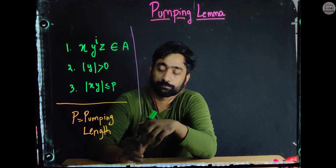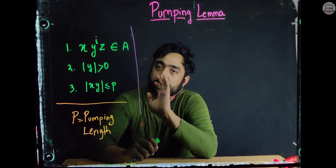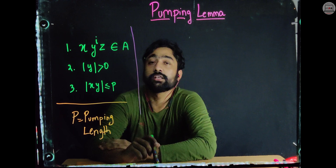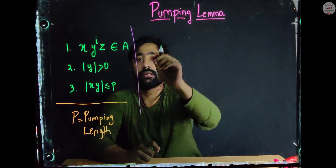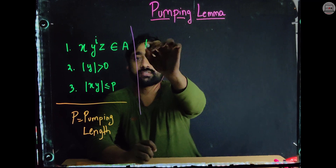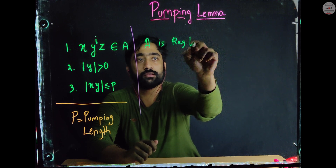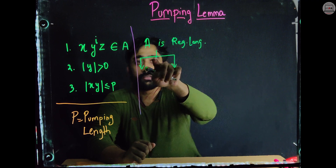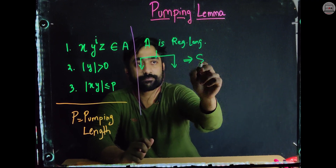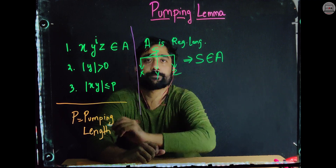These three conditions are very important. If any of these conditions are not satisfied by a language, it is straight away called a non-regular language. The first condition is x·y^i·z. Let's assume that whatever language is given to you is a regular language. We take a temporary string s which belongs to that language, and we divide s into three parts: x, y, and z.